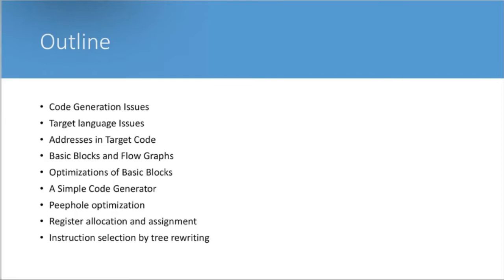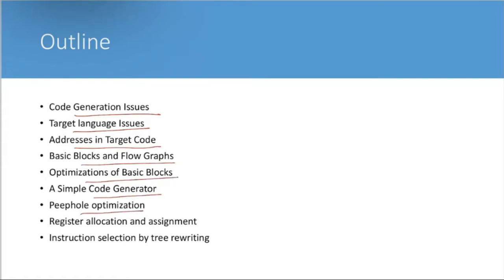In code generation, we are going to discuss about code generation issues, target language issues, addressing in the target code, basic block and flow graph, optimization of basic block, simple code generation, peephole optimization, register allocation and assignment, and instruction selection by rewriting.